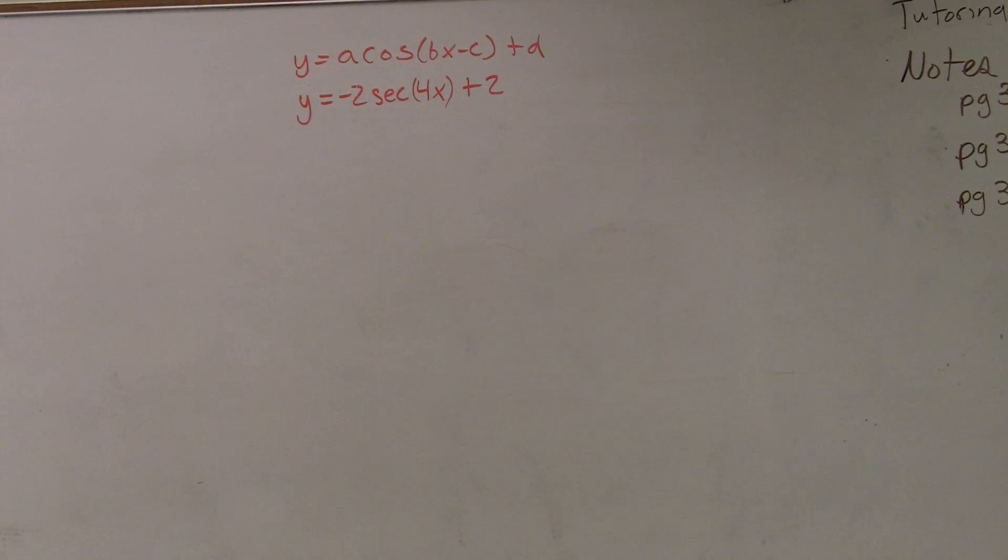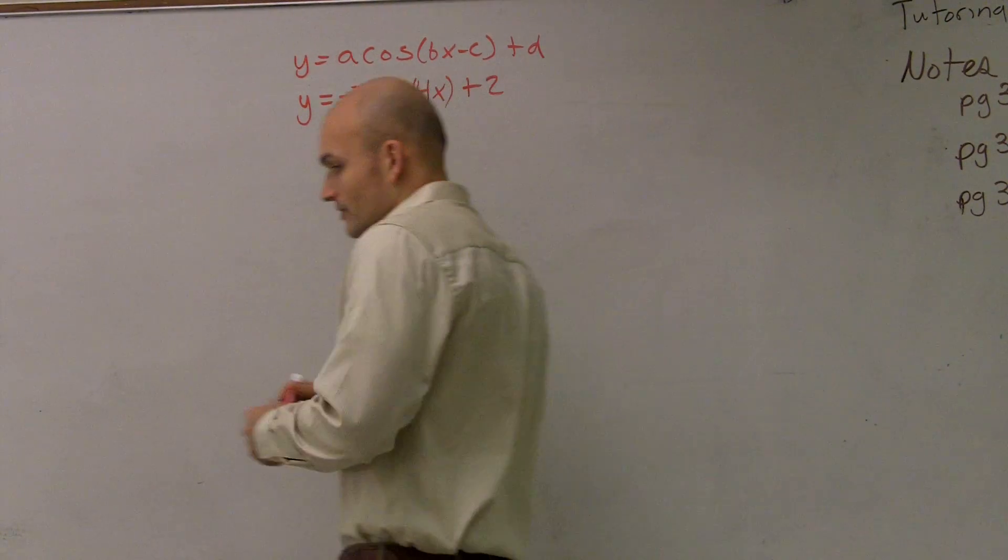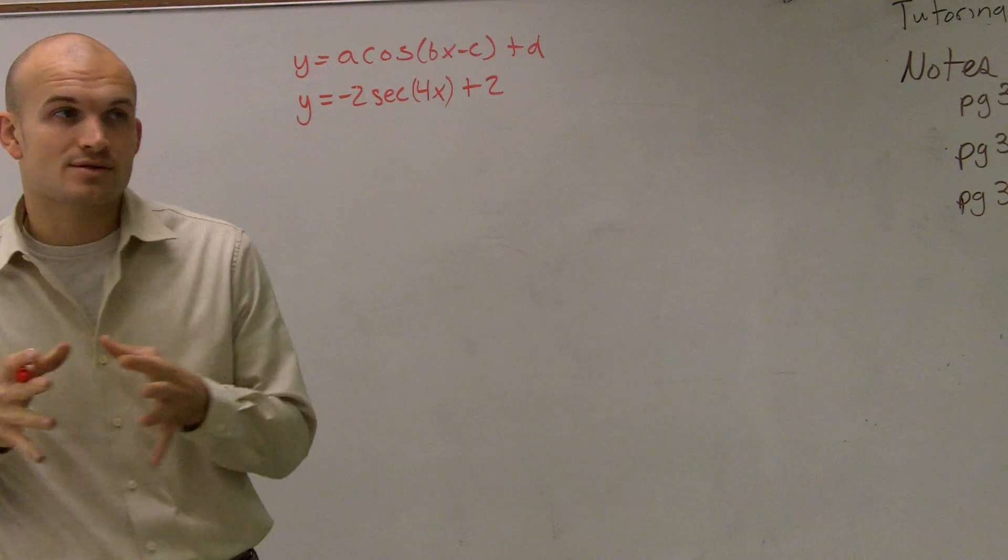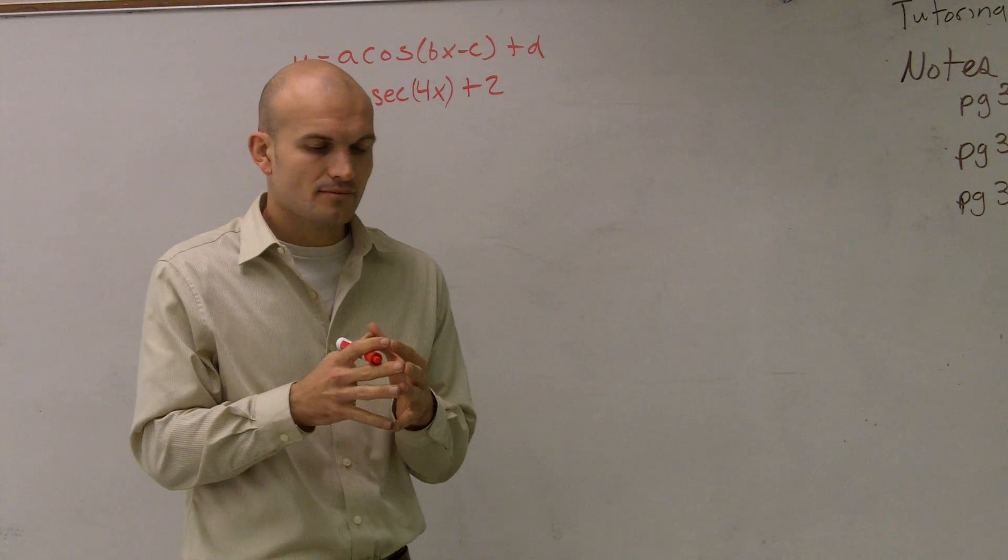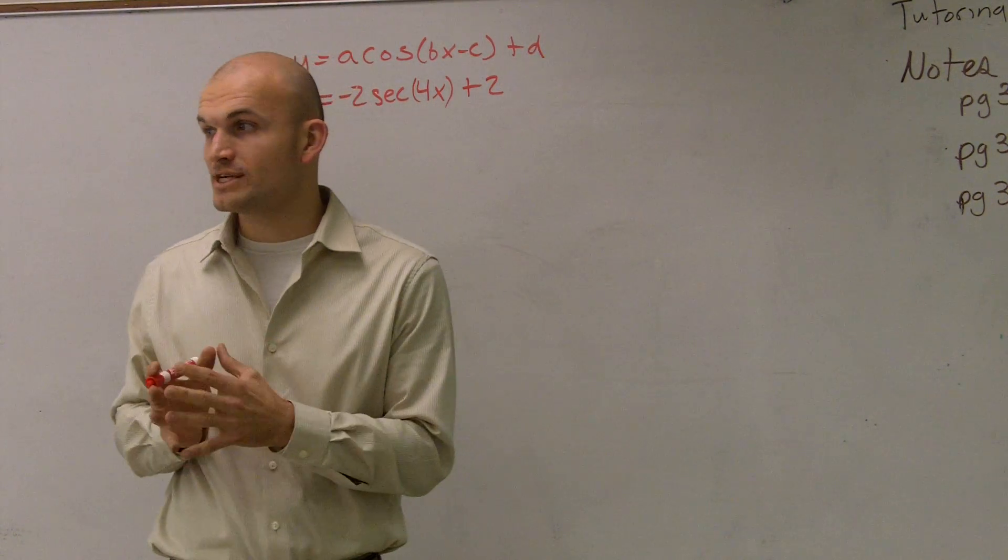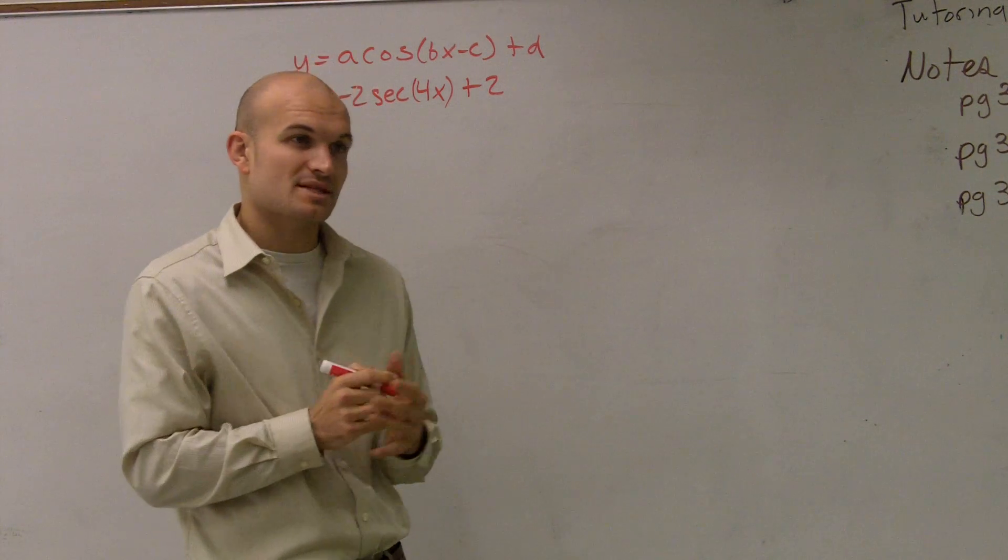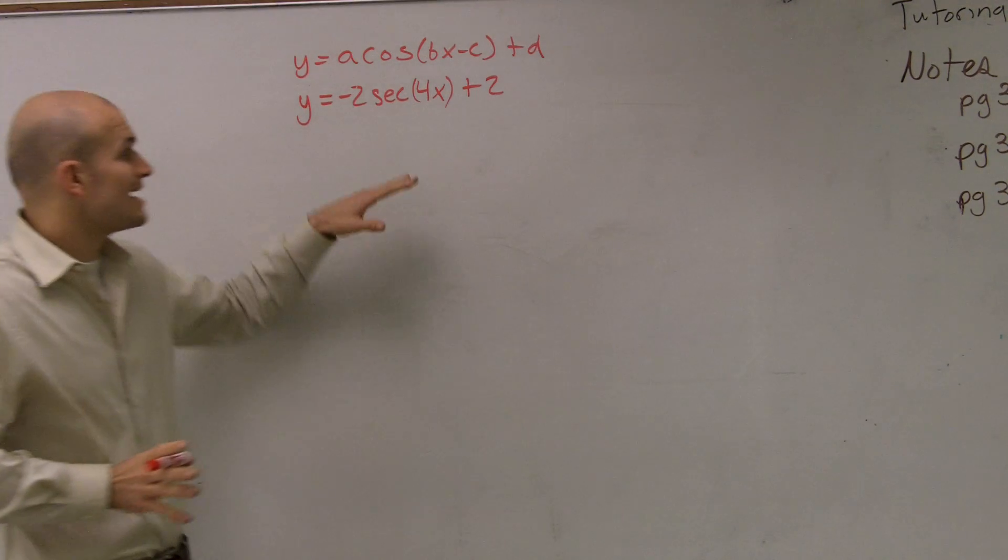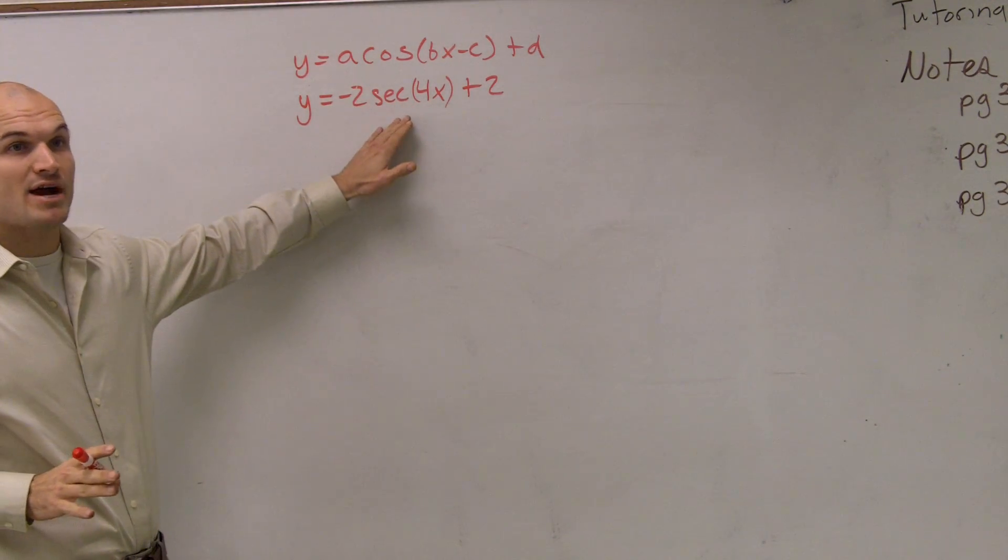I think you guys can do these. By now, hopefully you just need more practice. All right, so when you have a secant and cosecant graph, what you need to do is worry about what the sine and cosine graphs are. So this is kind of going to be like what we previously did.